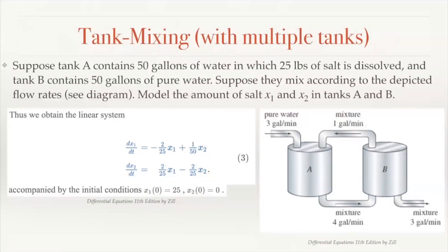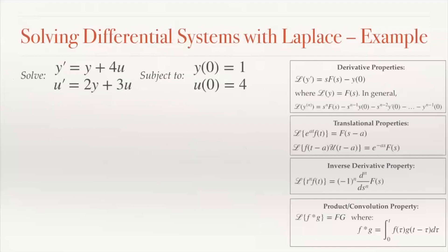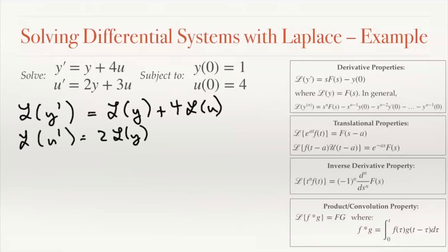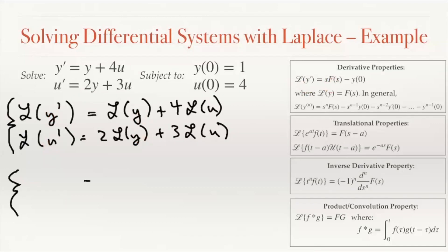Let's illustrate this on a different problem just to avoid fractions, although it's exactly the same process. We'll solve this system of differential equations subject to the given initial conditions. The way to do this is we take the Laplace transform of both sides of both equations and use linearity to pull out the constants. When we had just one function we used capital F, but when we have multiple functions we use a capital variant of each letter.